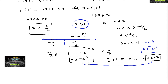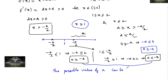From both conditions together with a ≥ -4, the possible value of a is -2. So the value of a is -2.